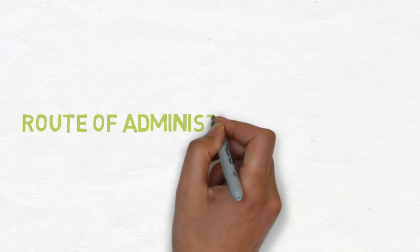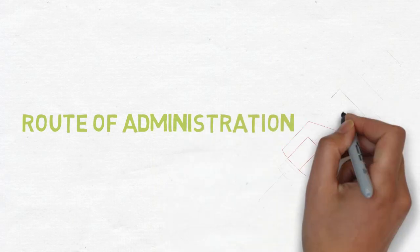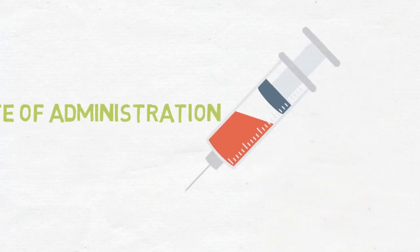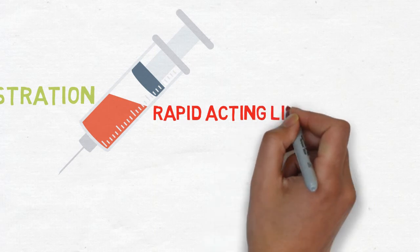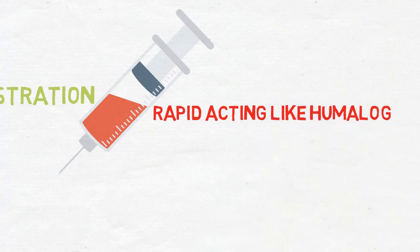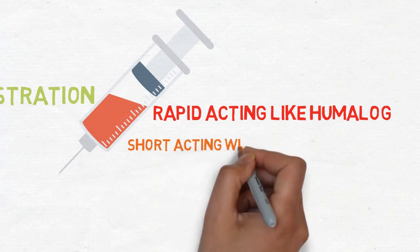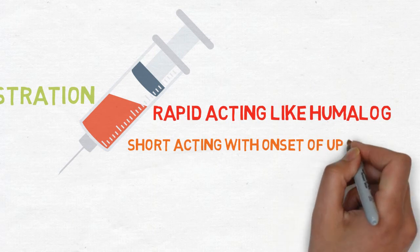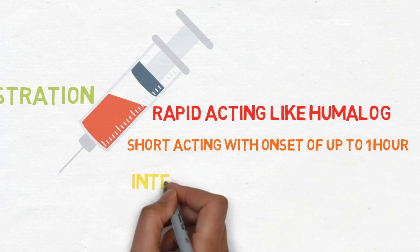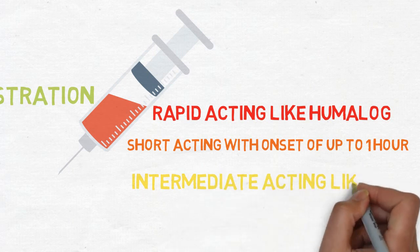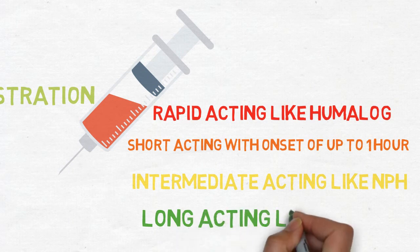Insulin is given through the subcutaneous route and it comes in many types. Rapid acting, like Humalog, with a short onset of 10 to 30 minutes. Short acting, which is the regular insulin, with an onset of up to 1 hour. Intermediate acting — an example would be NPH. Lantus would be the long-acting insulin.